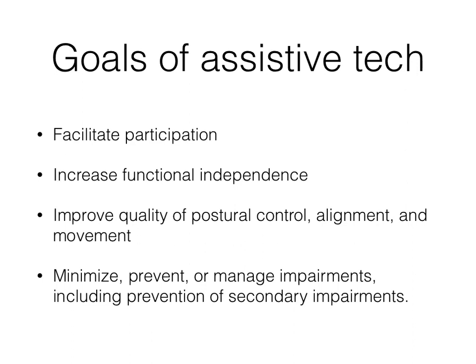We also want to use assistive technology to improve quality of postural control, alignment, and movement — getting the body aligned as well as possible and keeping the center of mass over the base of support. We're really trying to minimize, prevent, or manage impairments, including prevention of secondary impairments. Getting good alignment and good posture helps prevent secondary impairments that can later lead to additional problems, pain, or even the necessity for surgical intervention.